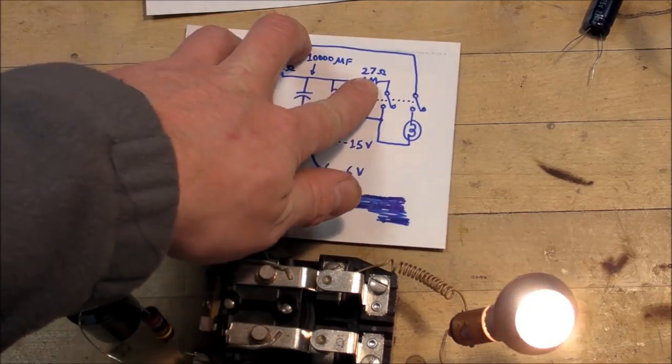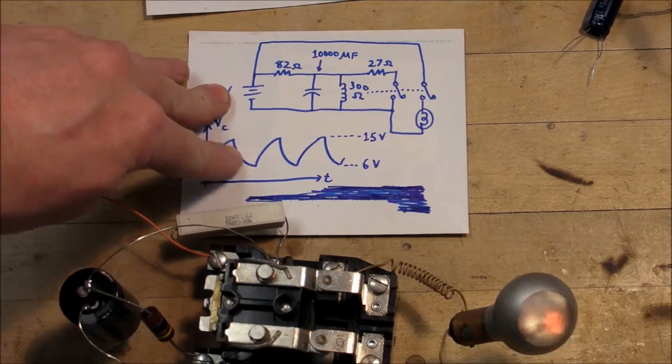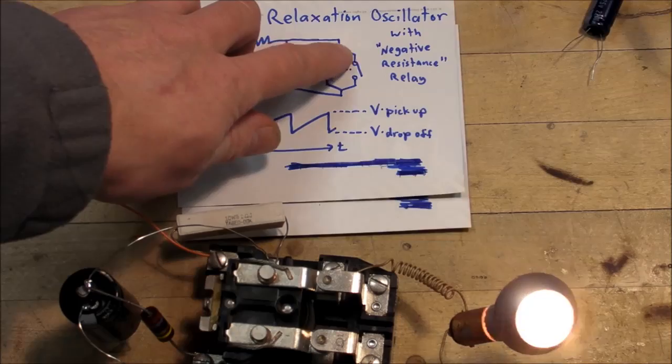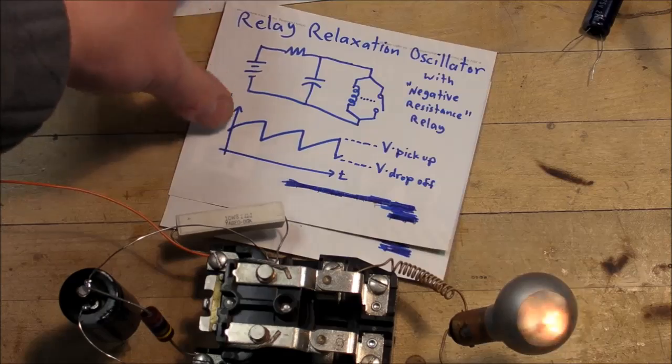This resistor is very important in order to give a nice smooth discharge of the cap as well. Whereas over here, there was no resistance in series with the switch. The cap discharged instantaneously.